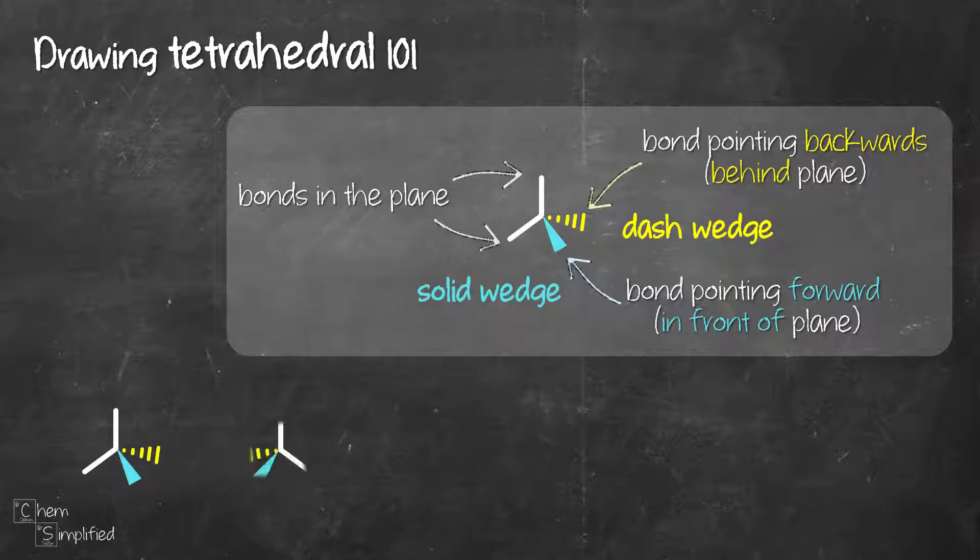Here are the different orientations that tetrahedral can be drawn. The usual setup is having two solid lines and two wedges. One is the solid wedge and one is a dash wedge.